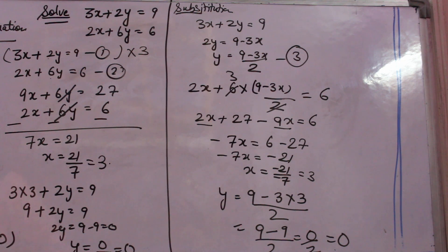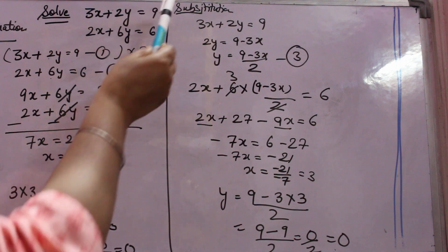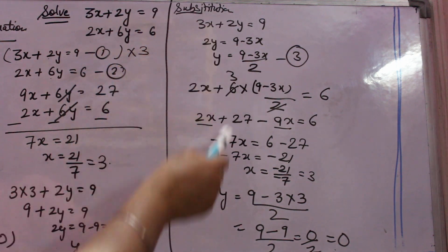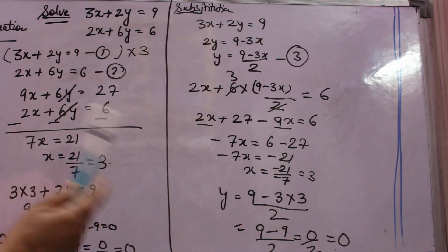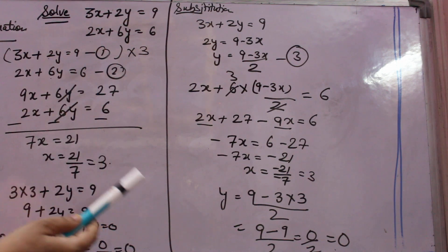If by name coming, then elimination method, you have to use this method. If by name coming substitution method, you have to use this method. If not coming by name, you have to use, you can use elimination method. It is easier than substitution. It is little bit lengthy. Elimination is easy.